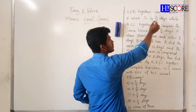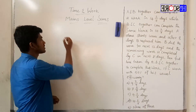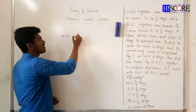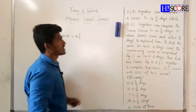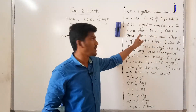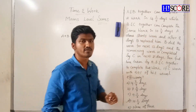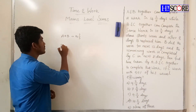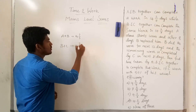First: A and B together can complete a work in 14 and 2/5 days. While B and C together can complete the same work in 10 and 2/3 days.